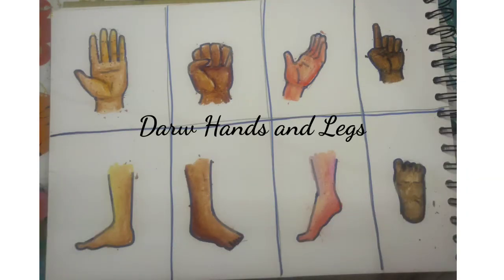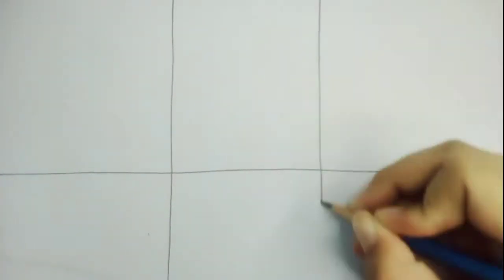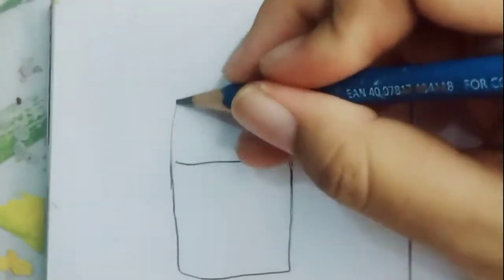Hello everyone, make again with me Miss Fincy. Today we are going to make some leg and hand poses. First, make a vertical line in the middle of the image and three horizontal lines to divide the paper into eight columns.